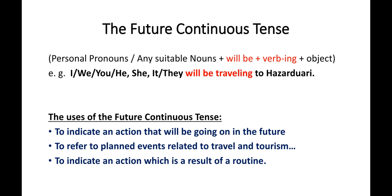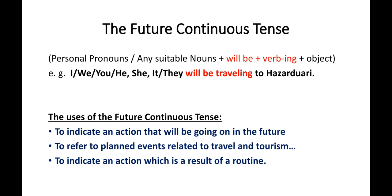Now let us see the future continuous tense. The future continuous tense is used to indicate an action that will be going on in the future. It is also used to refer to planned events related to travel and tourism, and this tense is used to indicate an action which is a result of a routine.